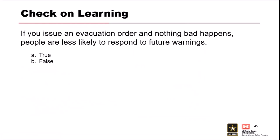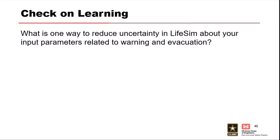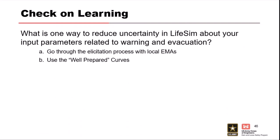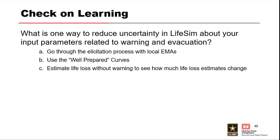Check on learning: if you issue an evacuation order and nothing bad happens, people are less likely to respond to future warnings — false. What is one way to reduce uncertainty in LifeSim about input parameters related to warning and evacuation? The answer is A — go through an elicitation with local EMAs. Run LifeSim with deterministic curves is another option, but the most appropriate way is conducting the elicitation.